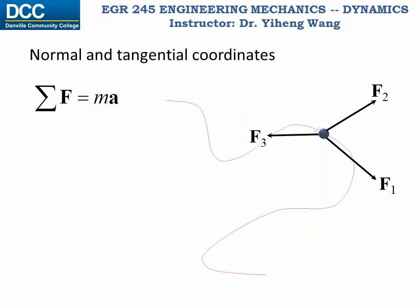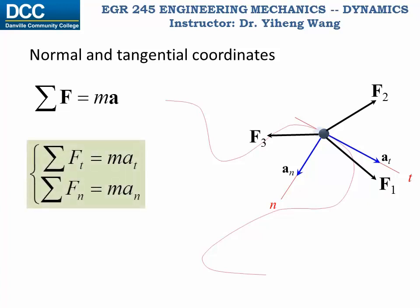We also learned how to use normal and tangential coordinates to study the motion of a particle. The tangential axis is always tangent to the path pointing towards the direction of motion. The normal axis is always perpendicular to the tangential axis, pointing towards the center of curvature. Represented using normal and tangential coordinates, there are only two acceleration components: a_t along the tangential direction and a_n along the normal direction. Therefore, Newton's second law becomes two scalar equations: the resultant force along the tangential direction equals mass times tangential acceleration, and the resultant force along the normal direction equals m·a_n.